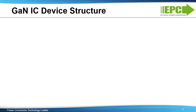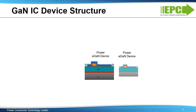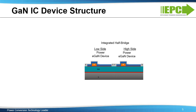This is how GaN integration works. If you start with the standard lateral power eGaN device, you can add to it a second power device, shown here in this animation. These devices don't necessarily communicate with each other unless they're electrically connected with metal layers. By putting a high side and low side transistor together on the same substrate, you can now create an integrated half bridge.